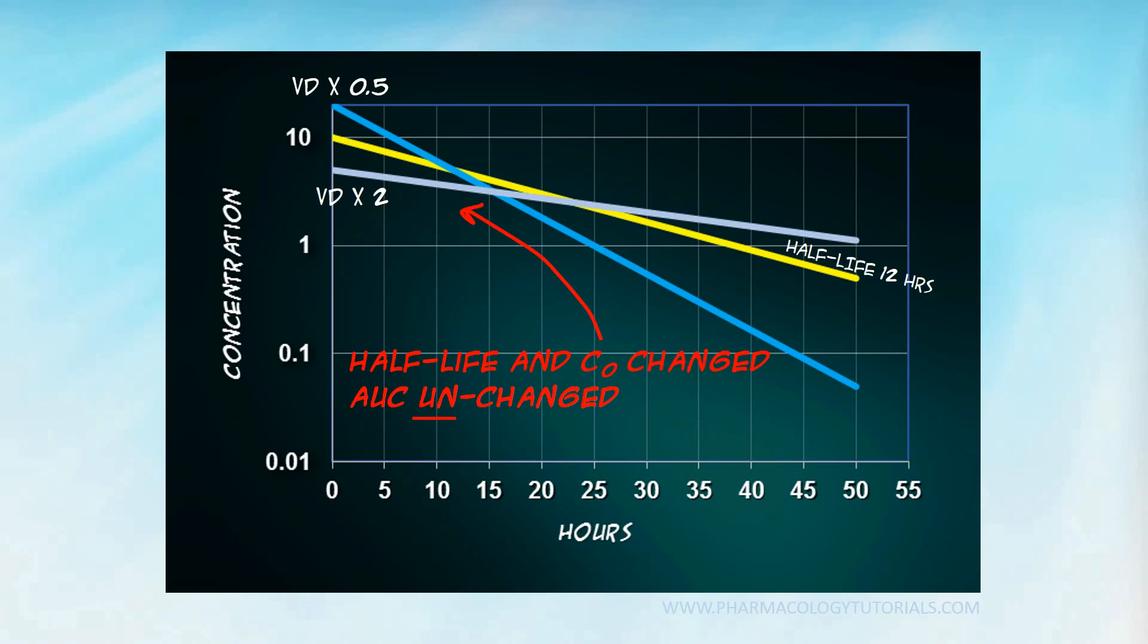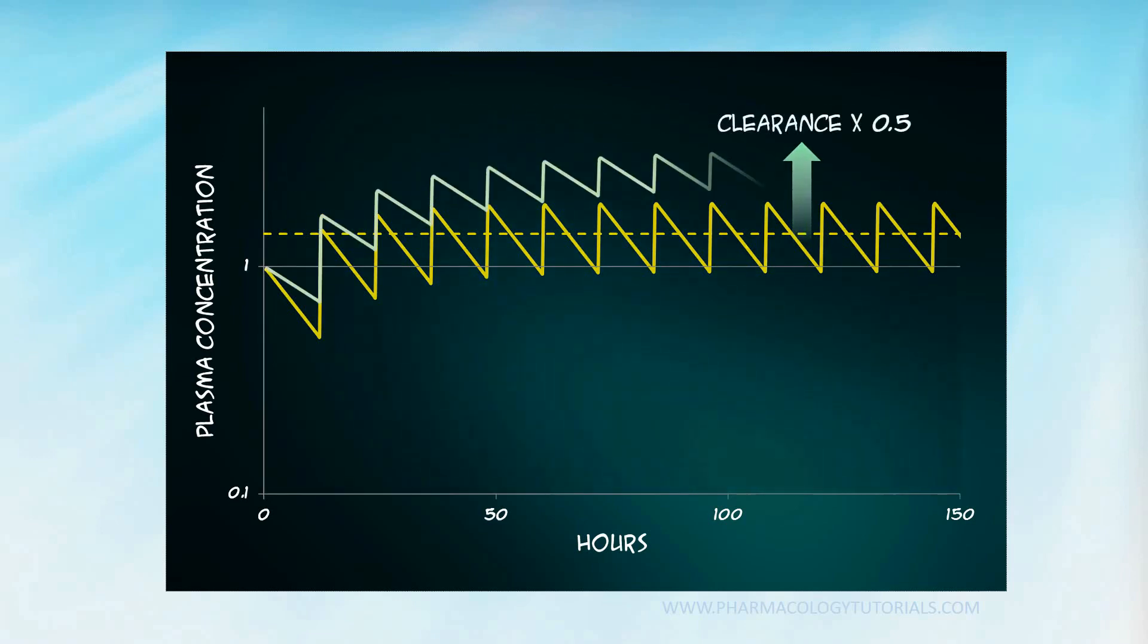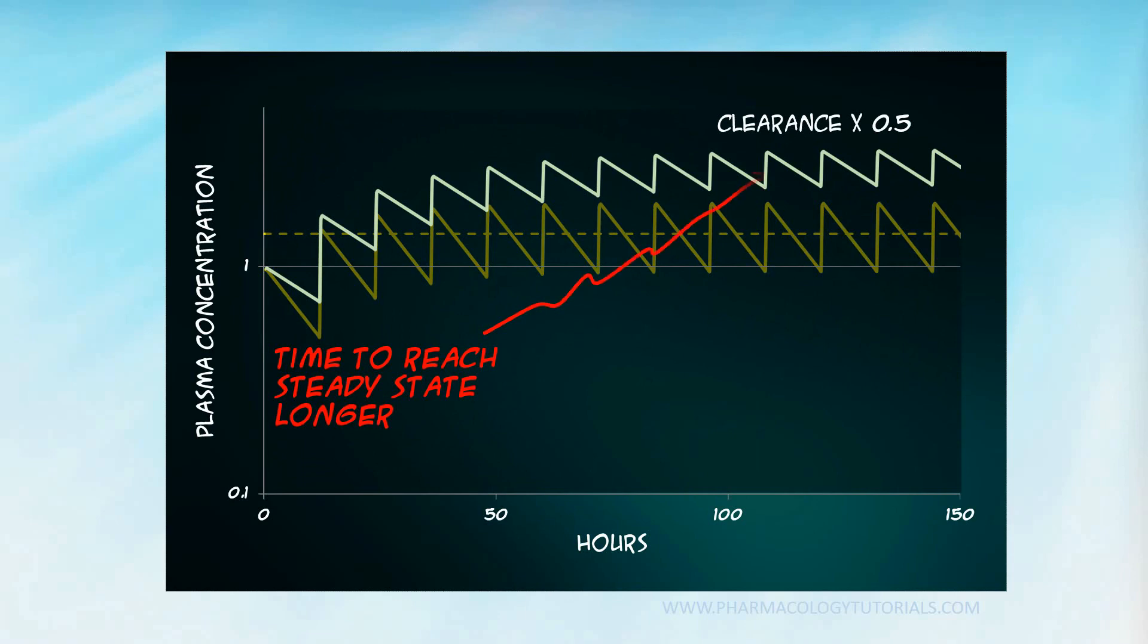Now think about how these play out when the drug is administered in the multi-dose regimen. Here you see it takes approximately 60 hours to reach steady state. If you halve the clearance, the AUC and steady state concentrations increase. And as the half-life also increases, the time to reach steady state increases.